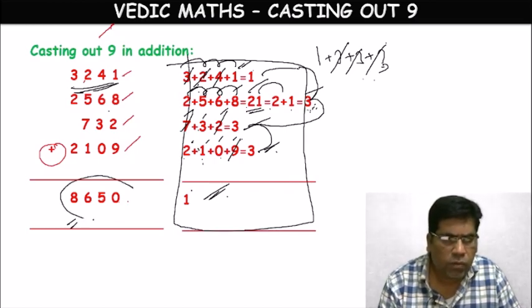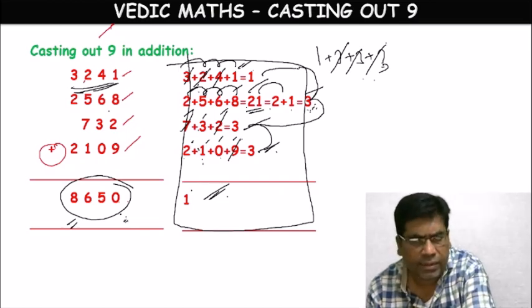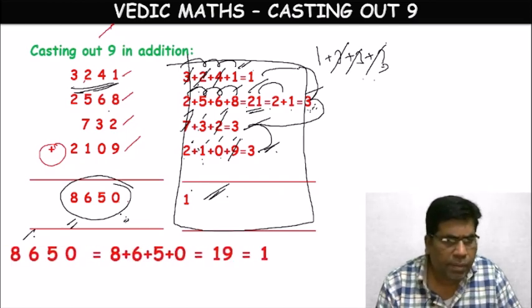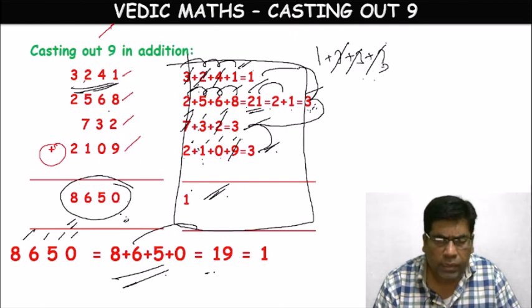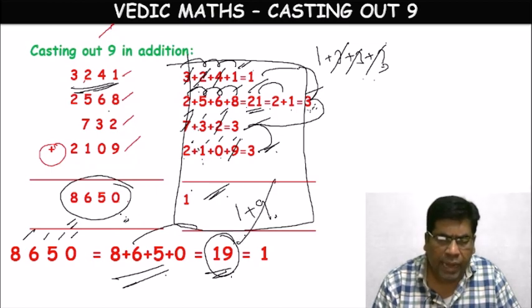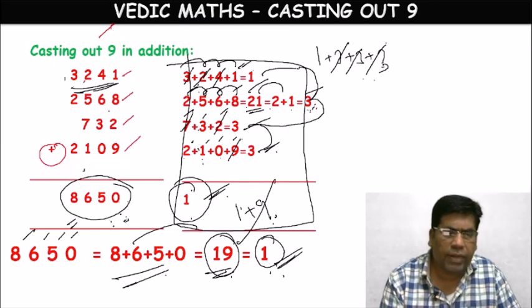Now check the result 8650: 8+6+5+0. No possibility of 9. Sum is 19. Writing as 1+9, cast out 9. Remaining: 1. Here also we got 1. So this answer is accurate.